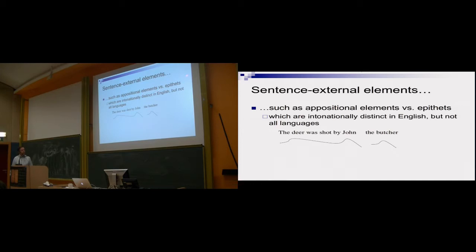What about this example? This is apposition versus what is sometimes called epithet. If we take this sentence, the deer was shot by John, the butcher. The butcher is adding extra information to John, it's the apposition. If you say, the deer was shot by John, the butcher, no pitch accent, no strong stress here, this becomes not his career, but it becomes a criticism, it becomes an epithet, it becomes your negative description of him. So by choosing an intonational pattern with a pitch accent here, not choosing it there, you get a semantic difference. This you can't do in every language. Romance languages seem not to be able to do this.